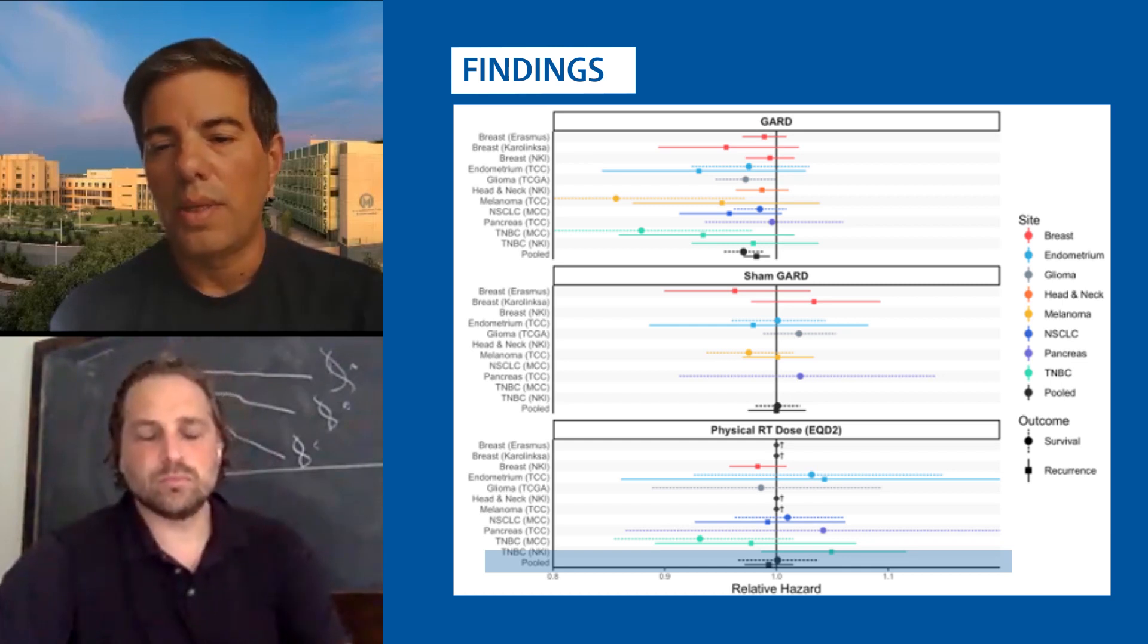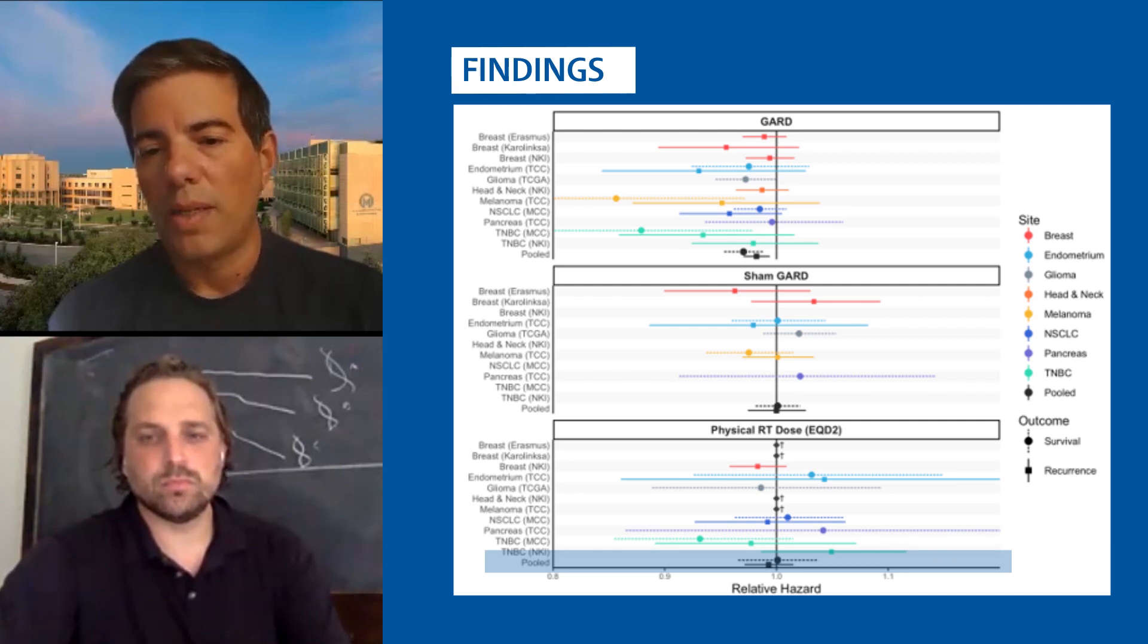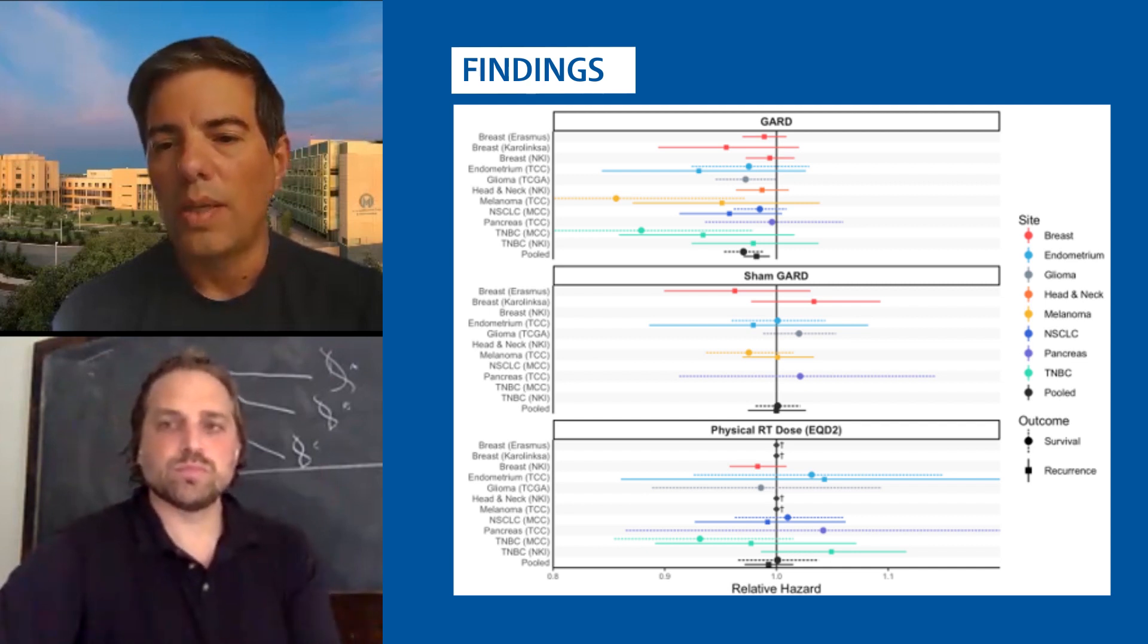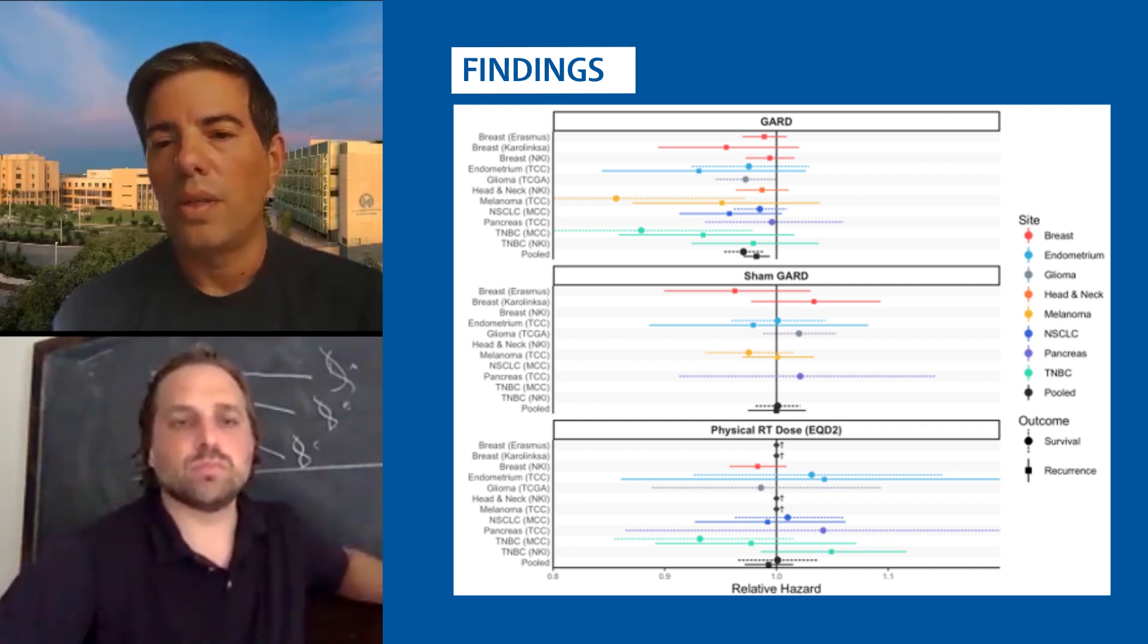And here we report physical dose as equivalent dose at two gray in the bottom panel. And as you can see, the black dots at the bottom, there's essentially no predictive ability of physical dose. So critically, what this is showing is that the biological effect that's induced by the physical dose, as quantified by GARD tells you more about the clinical outcome of the patient that you're treating than the dose you're actually delivering.